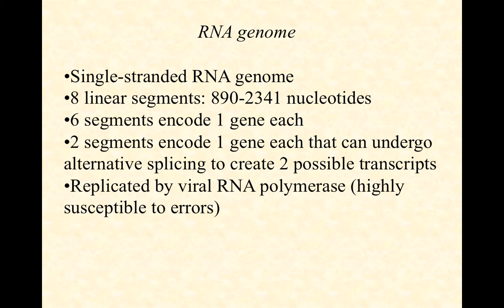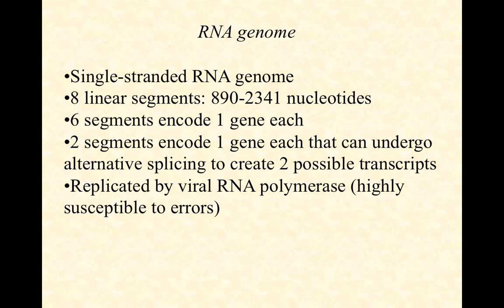RNA polymerases do not have proofreading activity, which means they introduce errors at a much higher frequency than DNA polymerase. Because of that, RNA-based genomes like influenza's can mutate much more rapidly. This becomes really important for understanding the diversity of influenza viruses and why we need a new vaccine year after year. We'll talk about antigenic drift and antigenic shift on the next video.